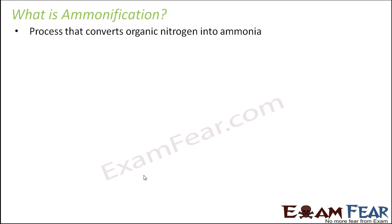You might be wondering what is this conversion of nitrogen to ammonia. When we talked about nitrogen fixation, we said it is about converting atmospheric nitrogen gas into ammonia. Now we are saying we have to convert organic nitrogen. Organic nitrogen means the nitrogen which is present inside the body of a living organism — needed to form proteins, DNA, and amino acids. When an organism dies or excretes wastes, nitrogen is present in its tissues as organic nitrogen. Converting that organic nitrogen into ammonia is known as ammonification.